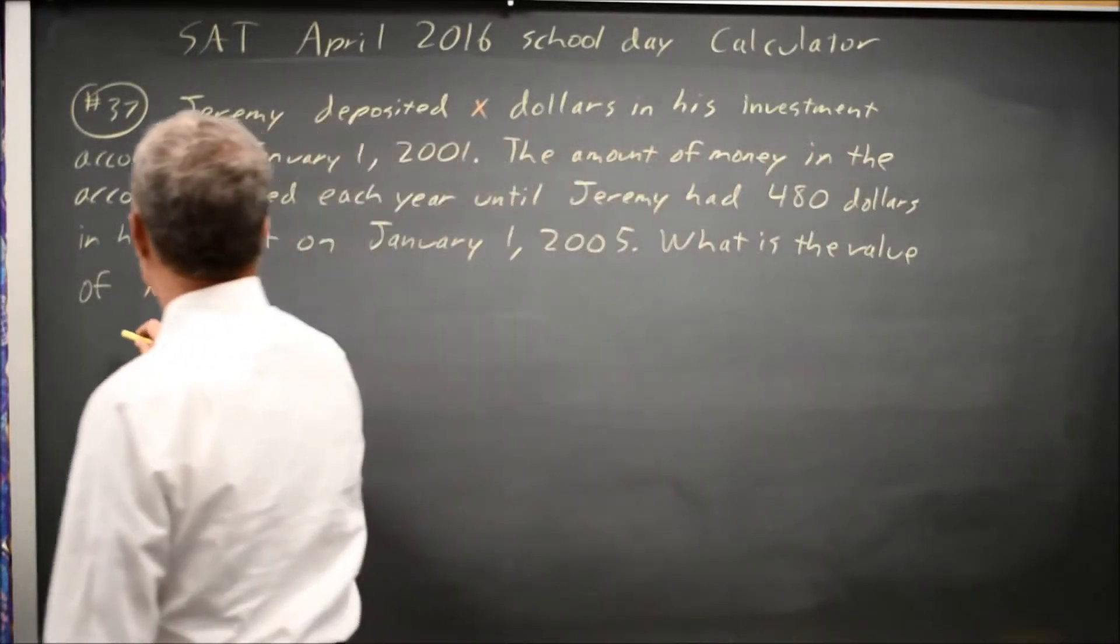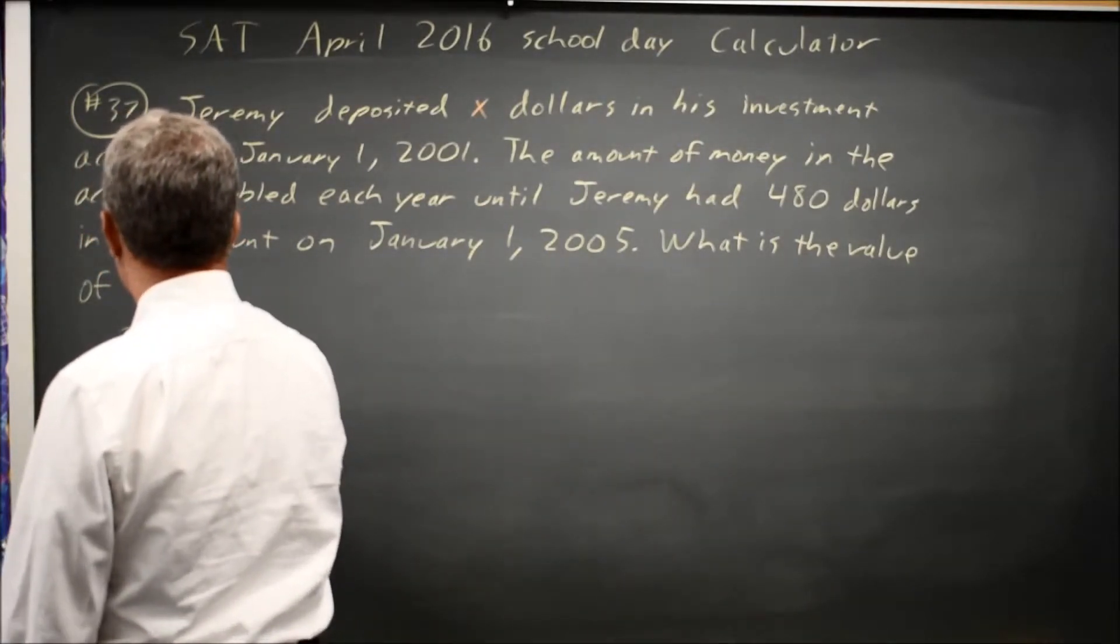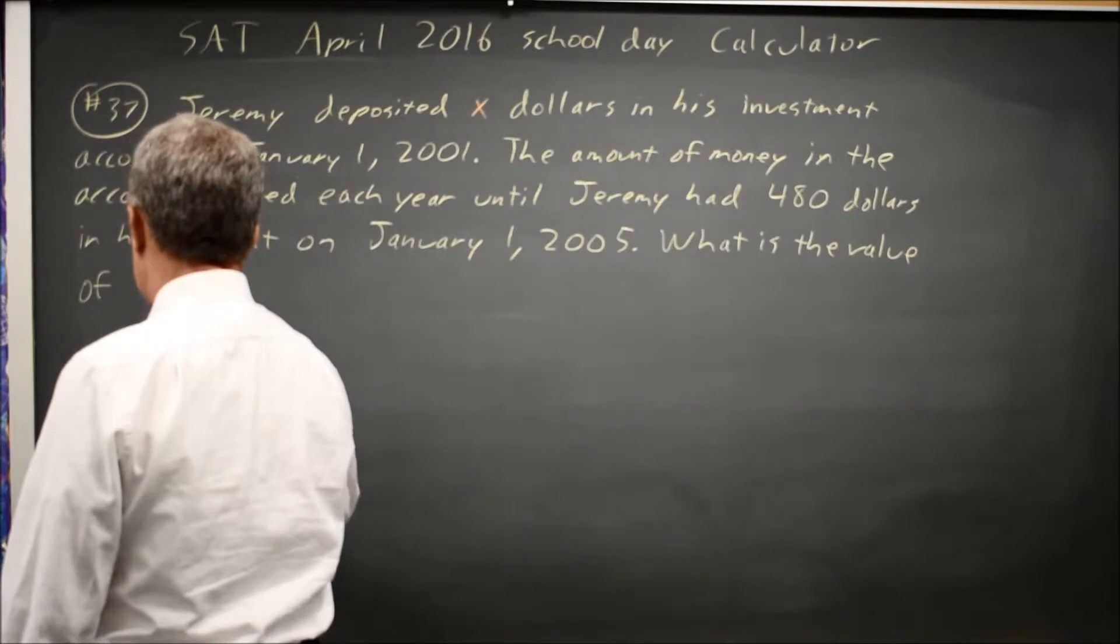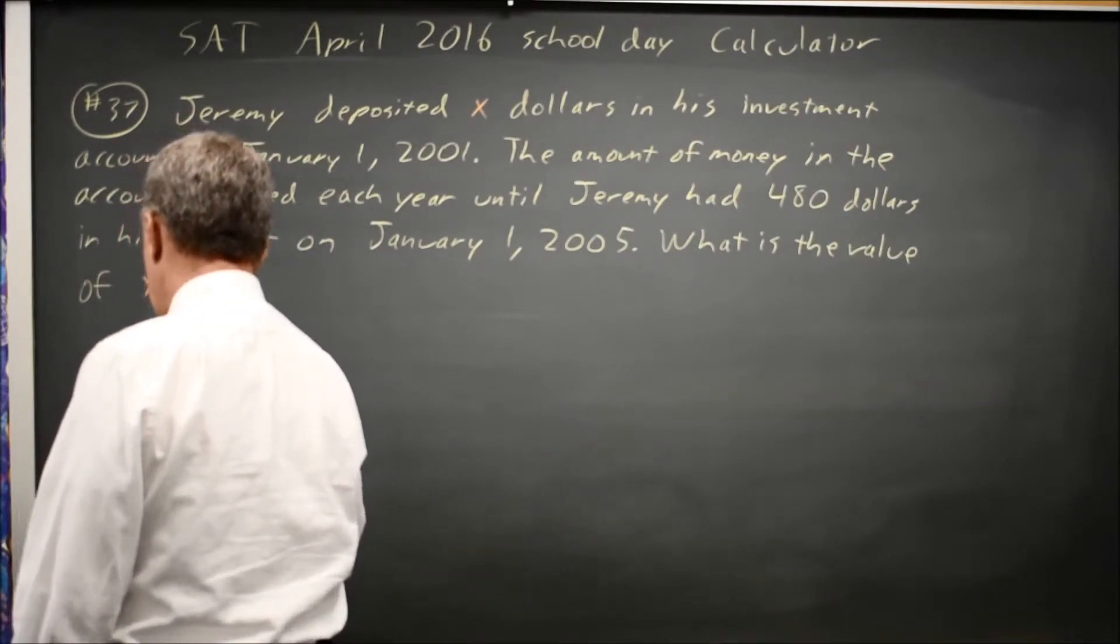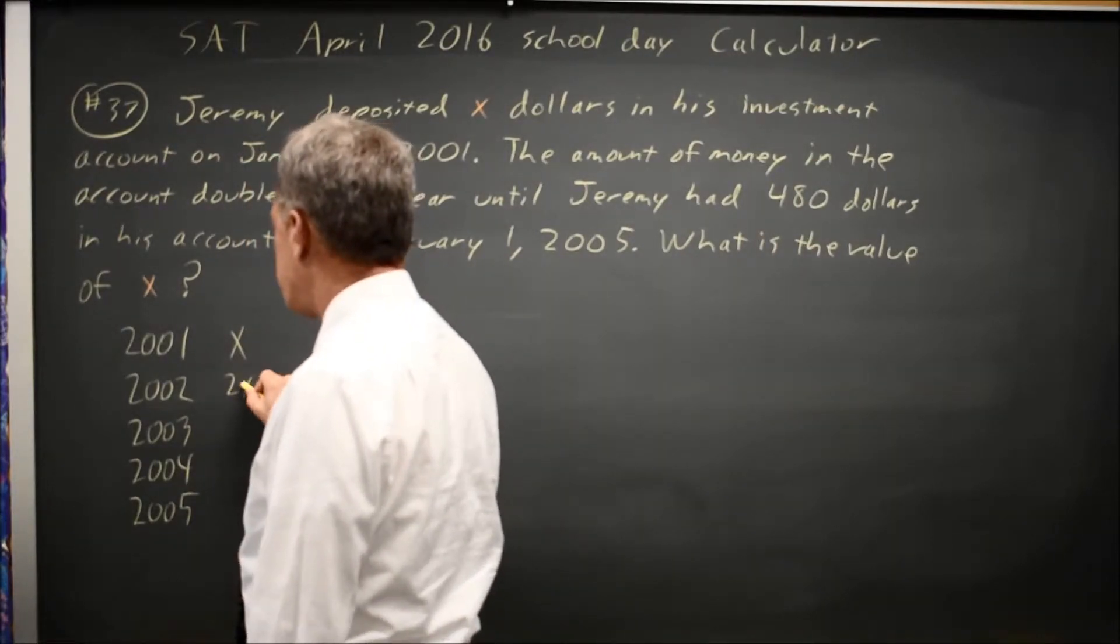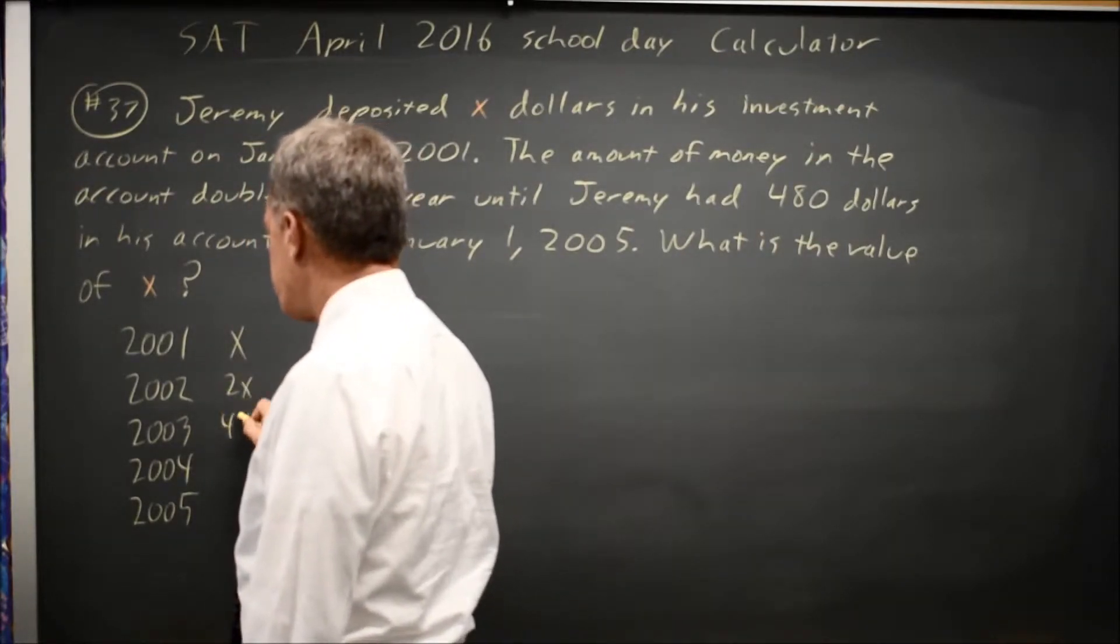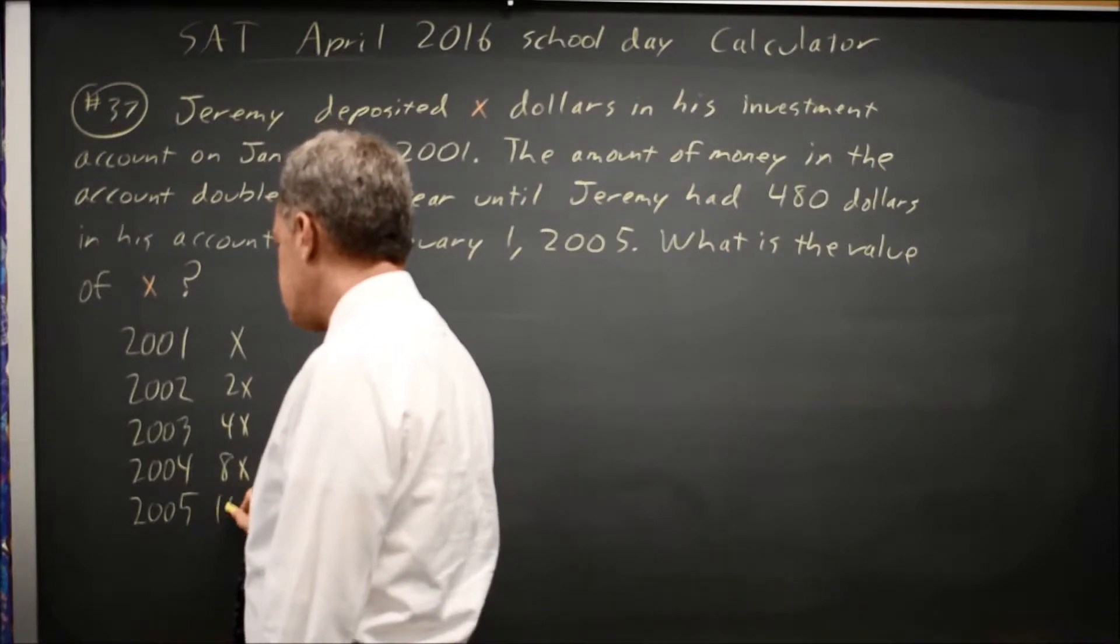They tell us that it starts in 2001 at X dollars and doubles every year until 2005, so it's 2X, twice 2X would be 4X, twice 4X is 8X, and twice 8X is 16X.